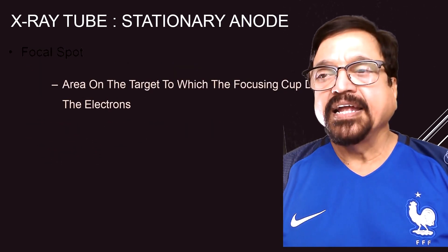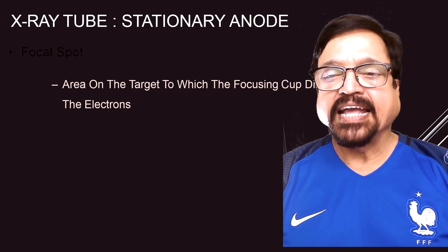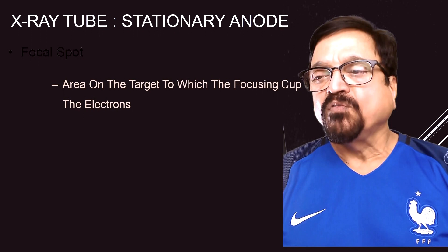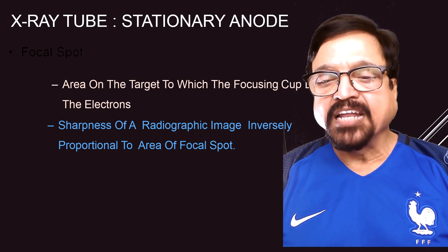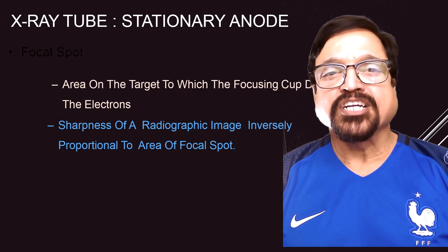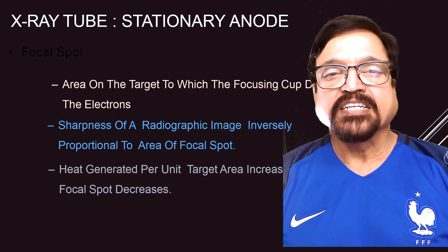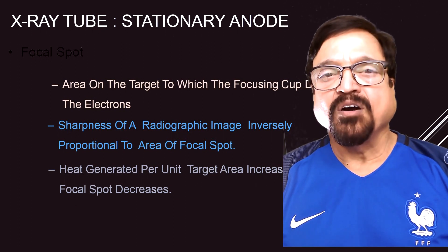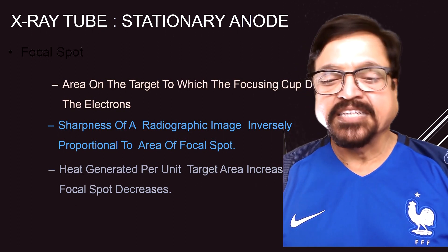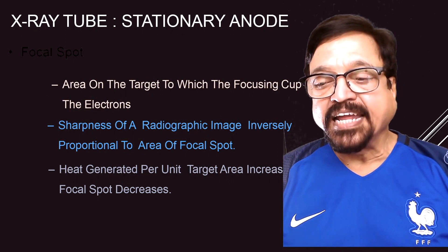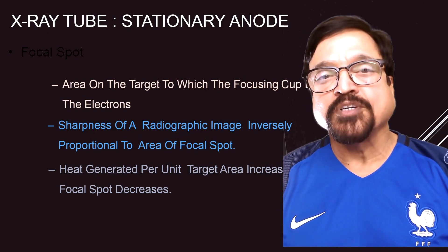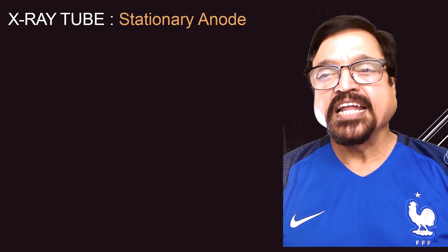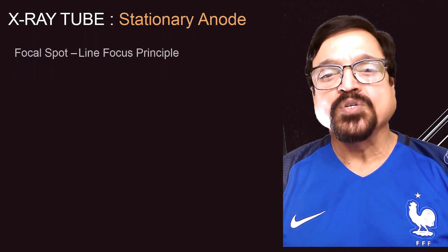Now let us come to certain technical aspects. What is a focal spot? It is the area on the target to which the focusing cup directs the electrons. The sharpness of a radiographic image is inversely proportional to the area of the focal spot. If you want a sharp image, the focal spot has to be small. If it is a large focal spot, the sharpness will not be there. When heat is generated, the size of the target area increases, which reduces the sharpness of the image. This is a limitation of the stationary anode tube, which can only be used in a few places.